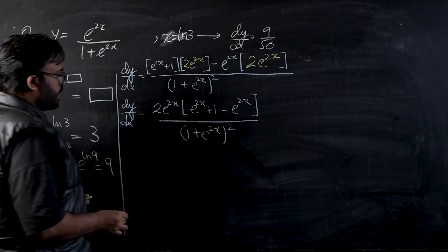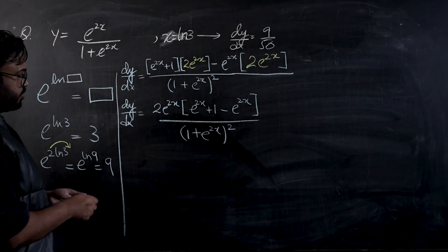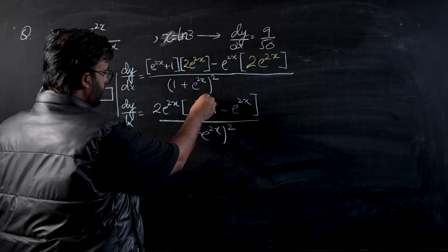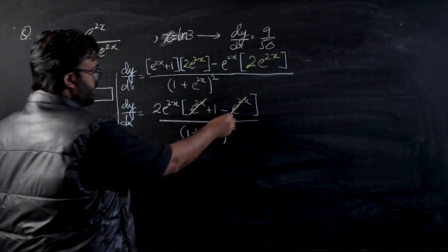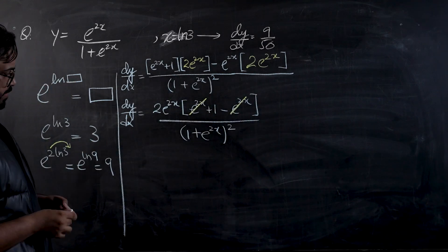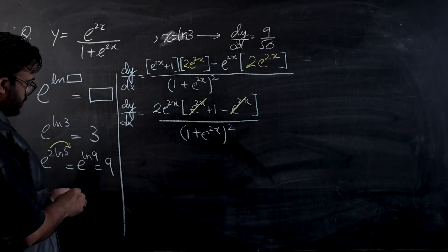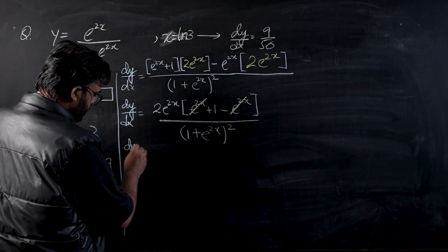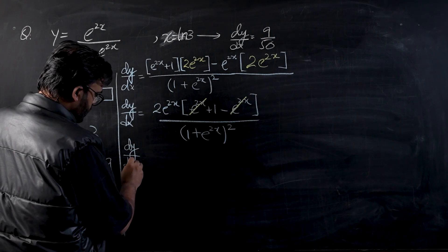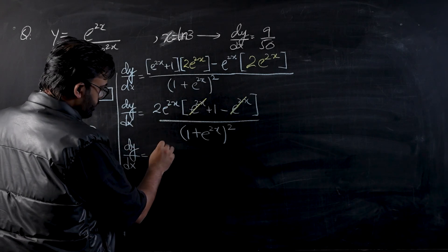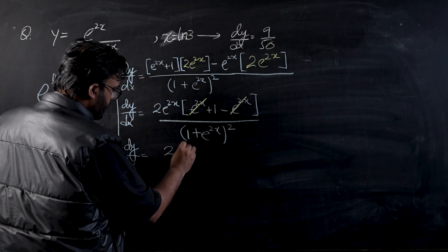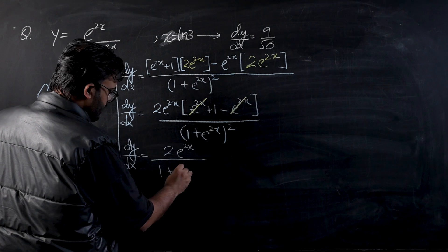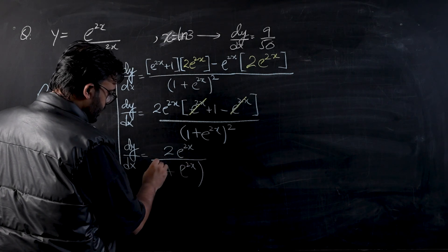Whole squared. Now you guys can see that these two terms are getting cancelled out, so e raised to power 2x minus e raised to power 2x would go away, and we will have only 2 e raised to power 2x. So dy by dx will be equal to 2 e raised to power 2x over 1 plus e raised to power 2x whole squared.